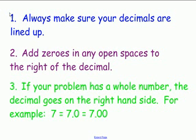7 can equal 7.0, 7.00. You can add 7 point as many zeros as you need in order to make that whole number have the same amount of decimal spaces to the right of the decimal. And that's really the key and hopefully this will help you to add and subtract decimals.